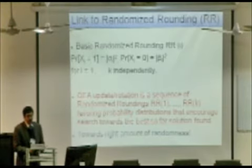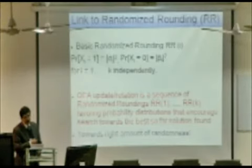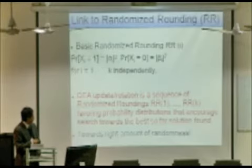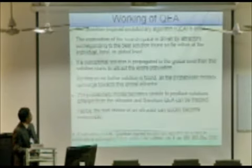Links for those from theoretical computer science background can also be found to randomized rounding. This is similar to what we do in randomized rounding. But the difference is that in randomized rounding you have k independent trials. Whereas in case of QEA, it's a sequence of randomized rounding favoring probability distributions that encourage search towards the best solution found so far. So you are marrying ideas from randomized rounding and greedy search. And the hope is that you are getting the right amount of randomness. That's through better implementation idea.